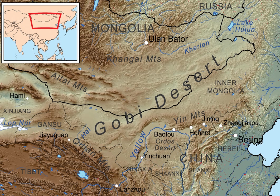Much of the Gobi is not sandy but has exposed bare rock. In its broadest definition, the Gobi includes the long stretch of desert extending from the foot of the Pamirs to the Greater Kingan Mountains, 116 to 118 degrees east, on the border of Manchuria.